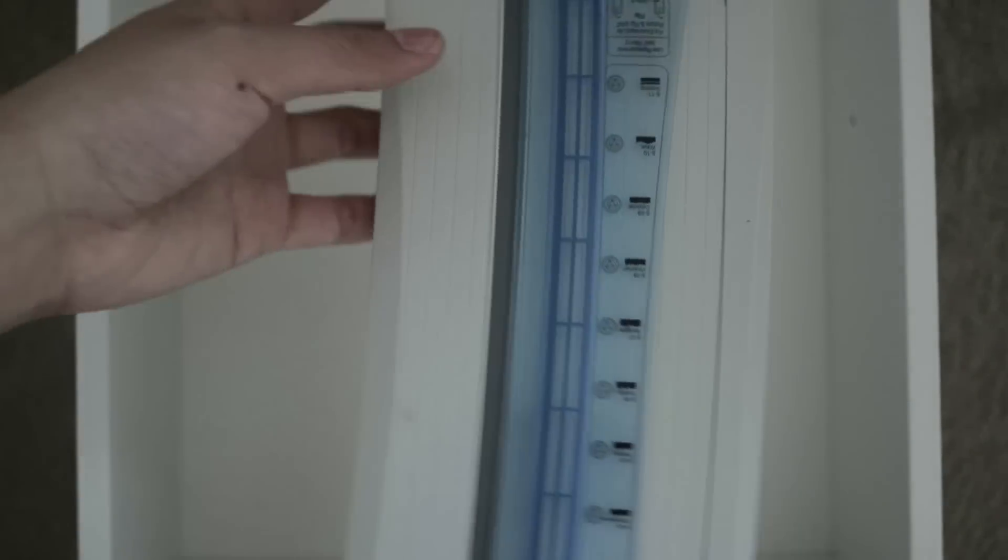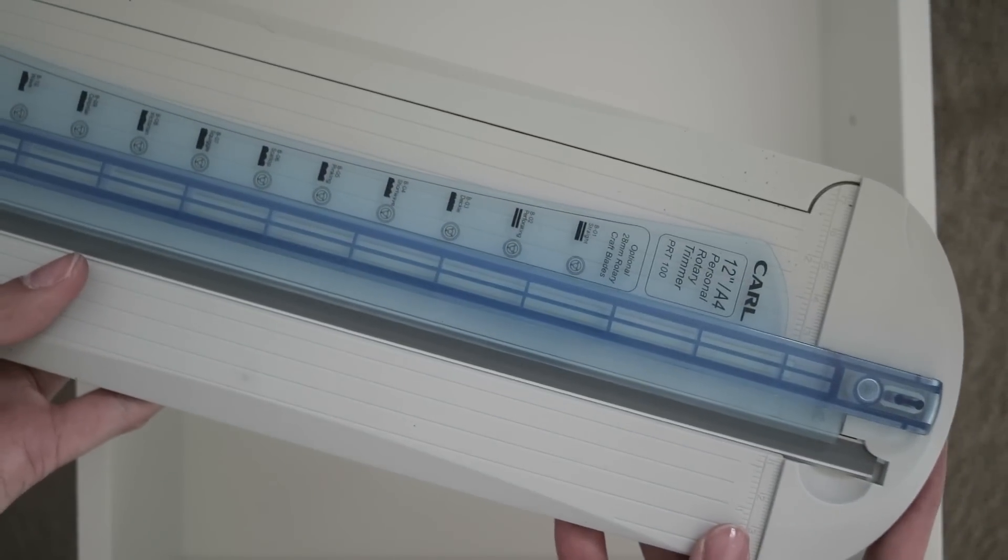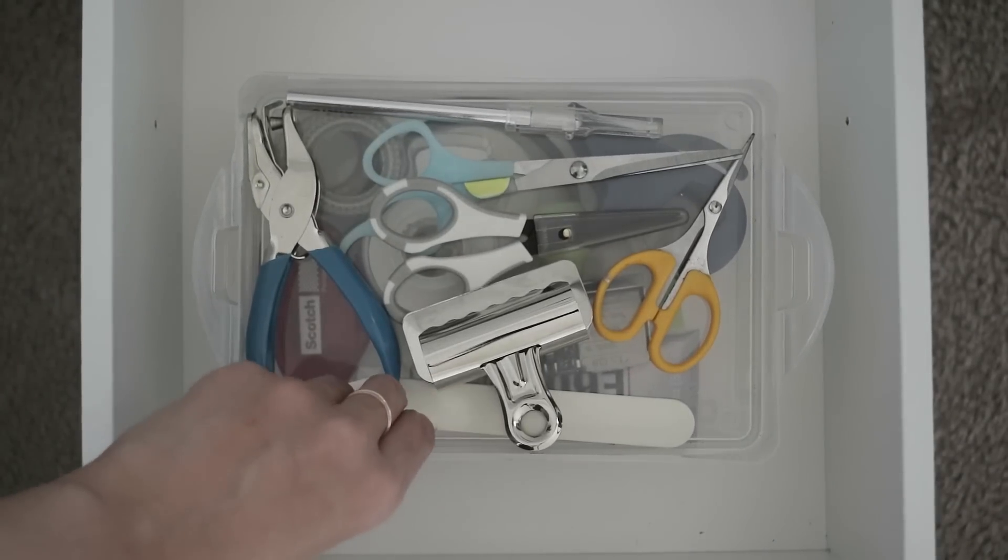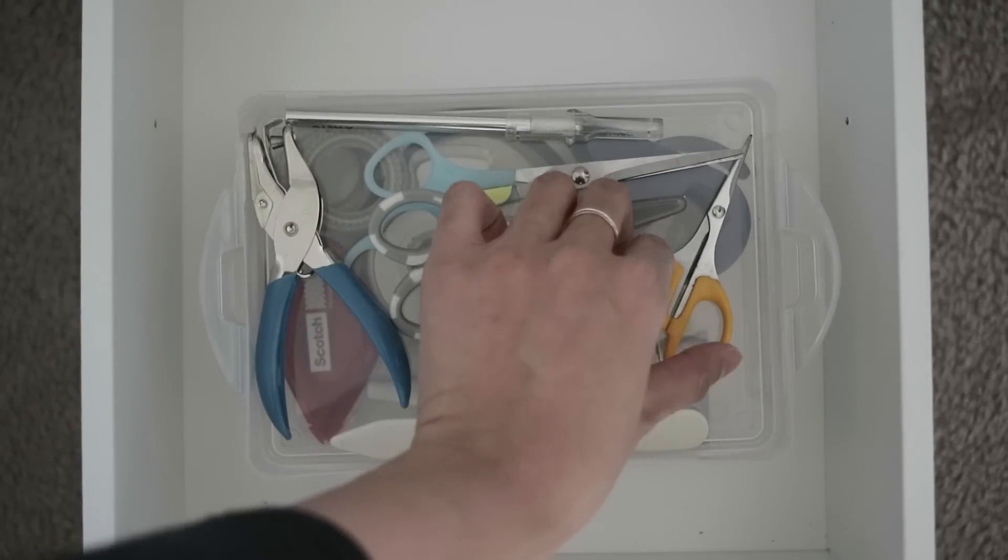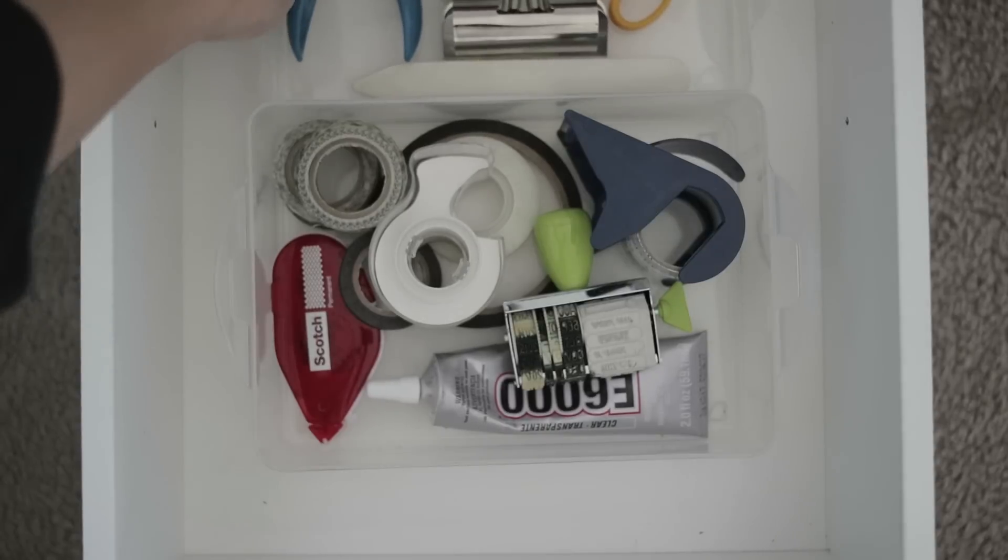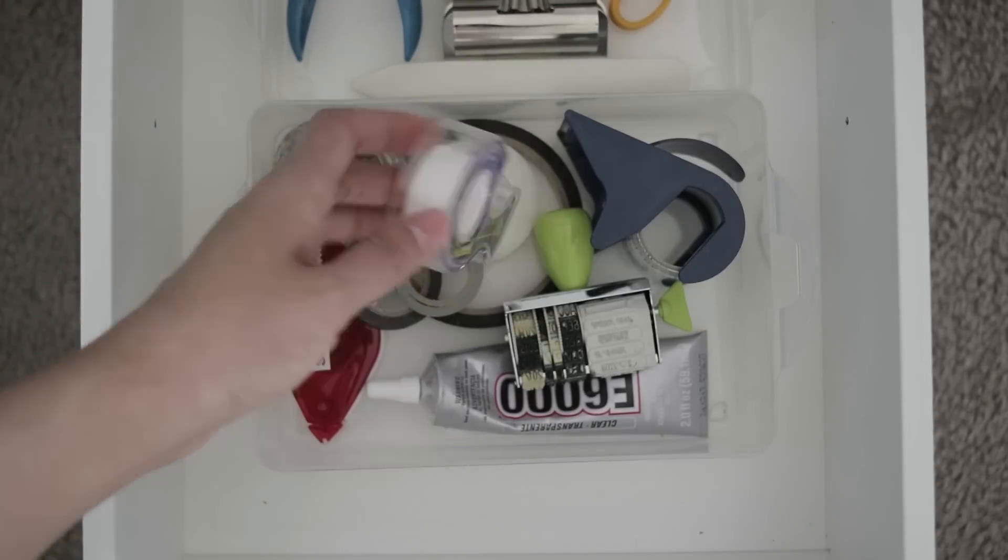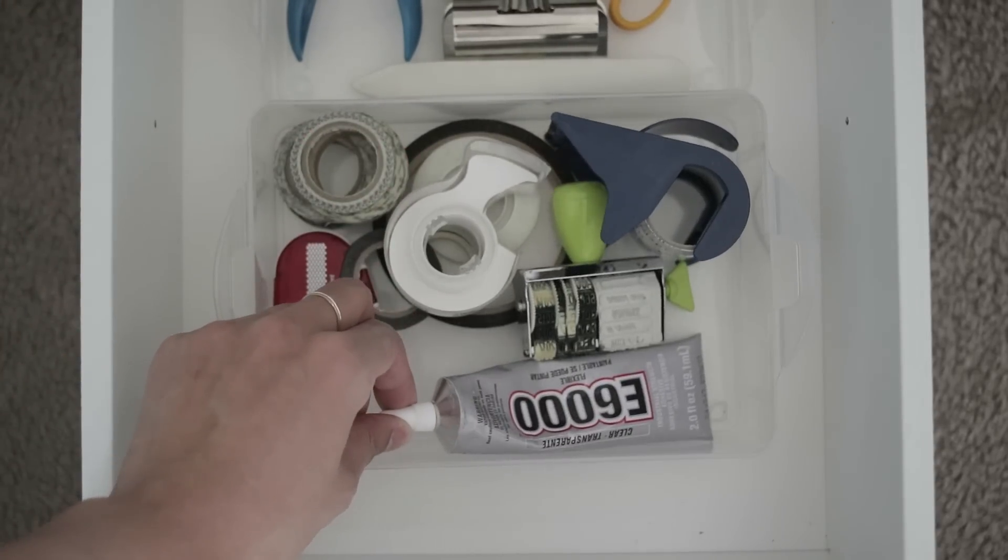And then right here is my paper trimmer that I've had for many years. Behind it, I have all of my scissors, my bulldog clips, my X-Acto knife. Below it, I have all of my tapes. I have some glue and stamp.